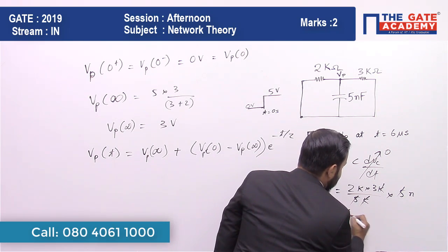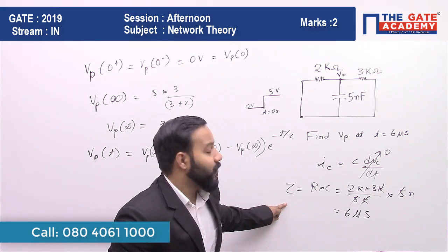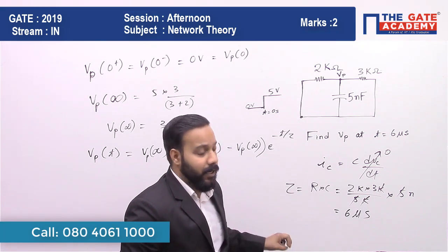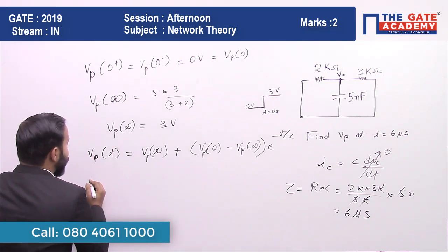Kilo and nano cancel, 5 and 5 cancel, and we get 6 microseconds. So τ, the time constant for this RC circuit capacitor, is 6 microseconds.